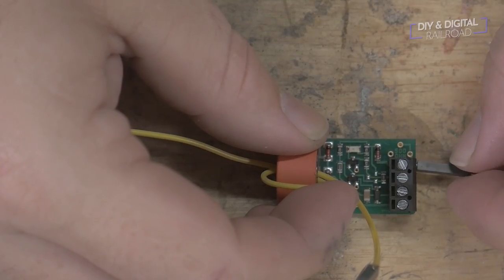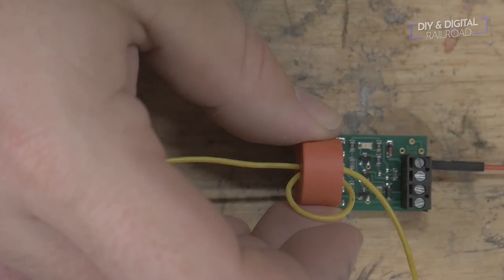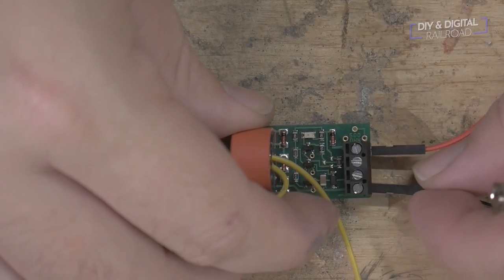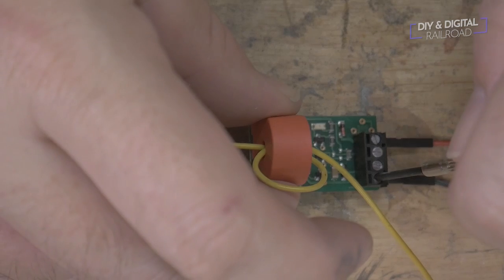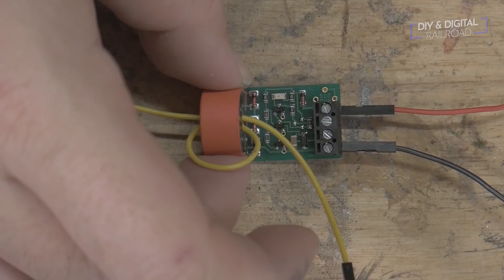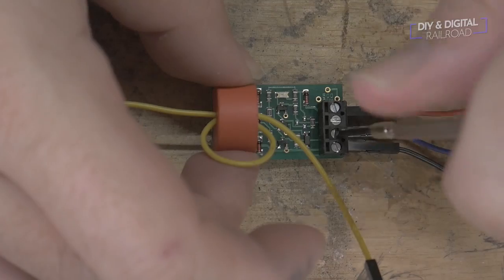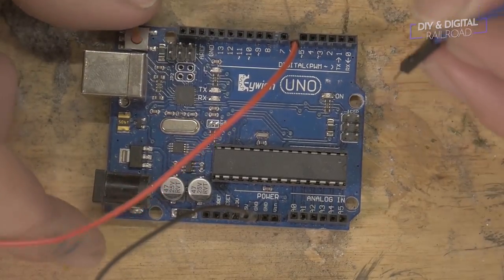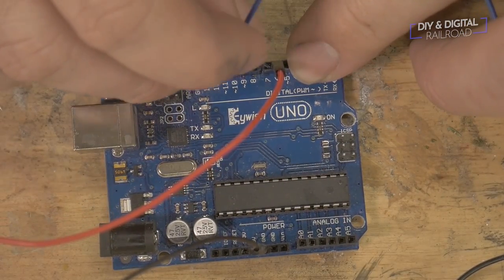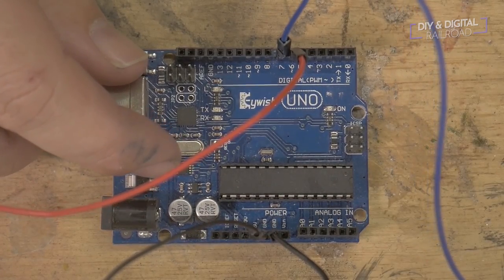We then connect to the 5 volt and ground pins and connect our output wire from the BD20 to the Arduino. Now it's time to connect the BD20 to the Arduino. We take our output pin and we connect it to digital pin 7. This is going to be our signal input. Of course we're going to connect our power pin to the 5 volt pin and our ground pin to one of the three ground slots.